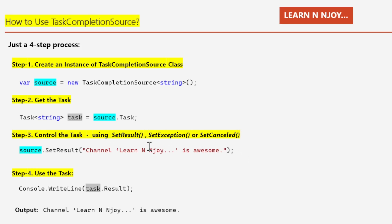Step four: use the task. We access the result of the task using the task's Result property — written as task.Result inside Console.WriteLine — to print the result. The output we get is: "Channel Learn Enjoy is Awesome." Now you should have an idea of how to use TaskCompletionSource.